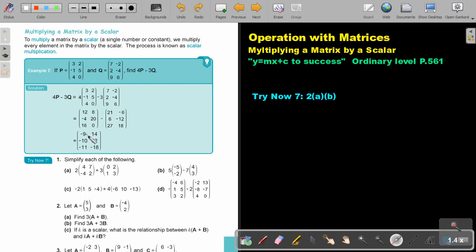12 minus 21 is negative 9. 12 minus, now the negative becomes a positive, so 8 plus 6 is 14. Negative 4 minus negative 6 is negative 10. 20 minus, this becomes positive, a negative times a negative, so 20 plus 12 is 32. 16 minus 27 is negative 11. And 0 minus 18 is negative 18.